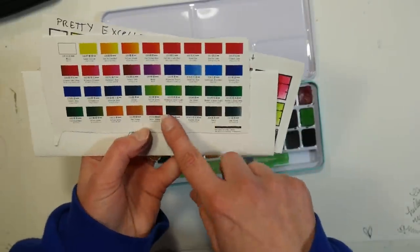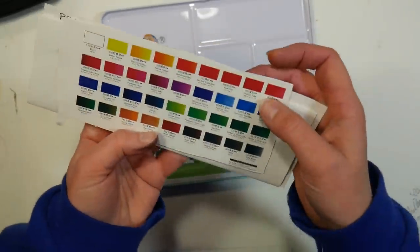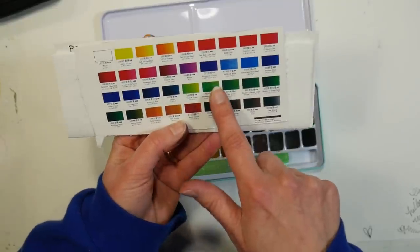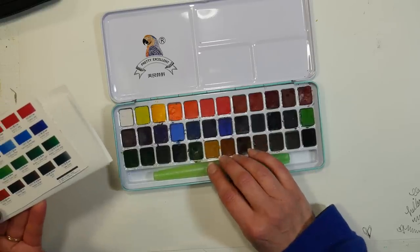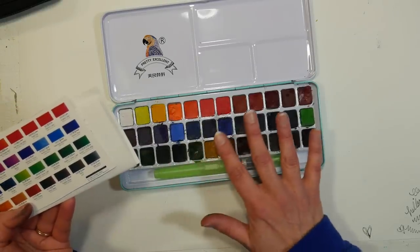On the back of the box there is information about the color names and light fastness, so you can see how durable those colors are going to be. I just think this is an excellent gift for a teenager or a kid that knows enough not to eat their paint.